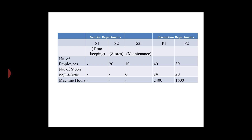The basis for apportionment is as follows: timekeeping S1 is based on the number of employees. The number of employees determines the cost allocated to S2, S3, P1, and P2. Stores S2 is based on the number of stores requisitions, which determines the cost allocated to S3, P1, and P2.